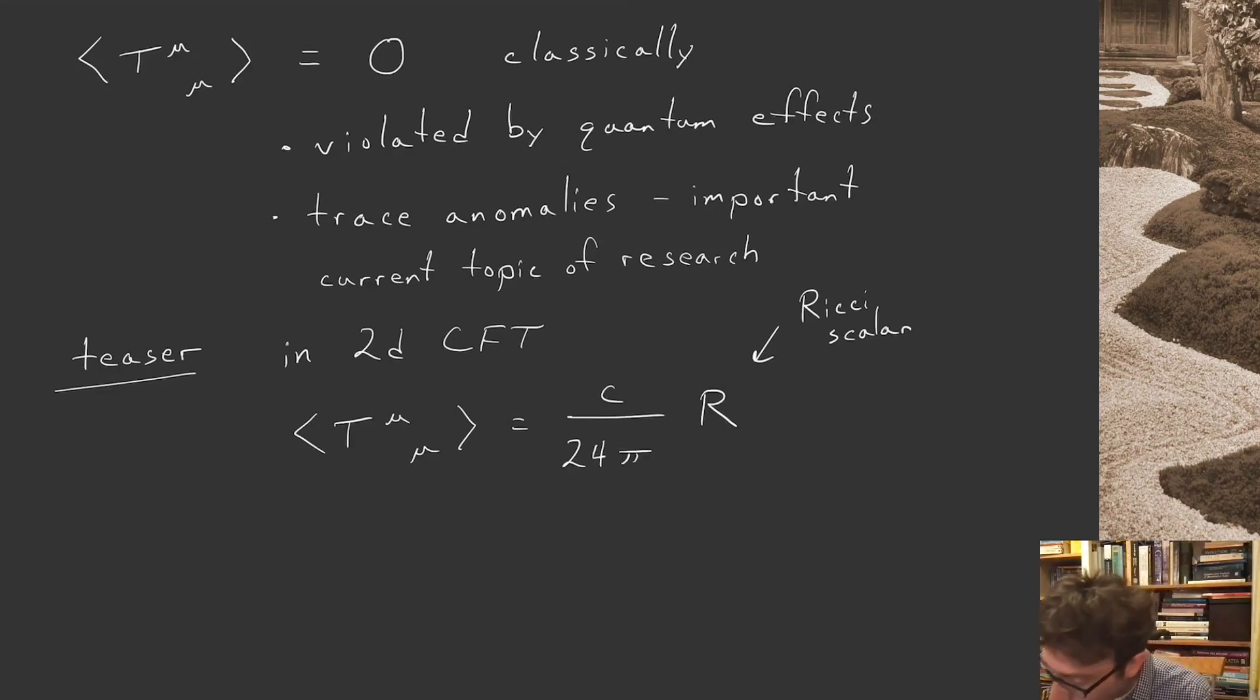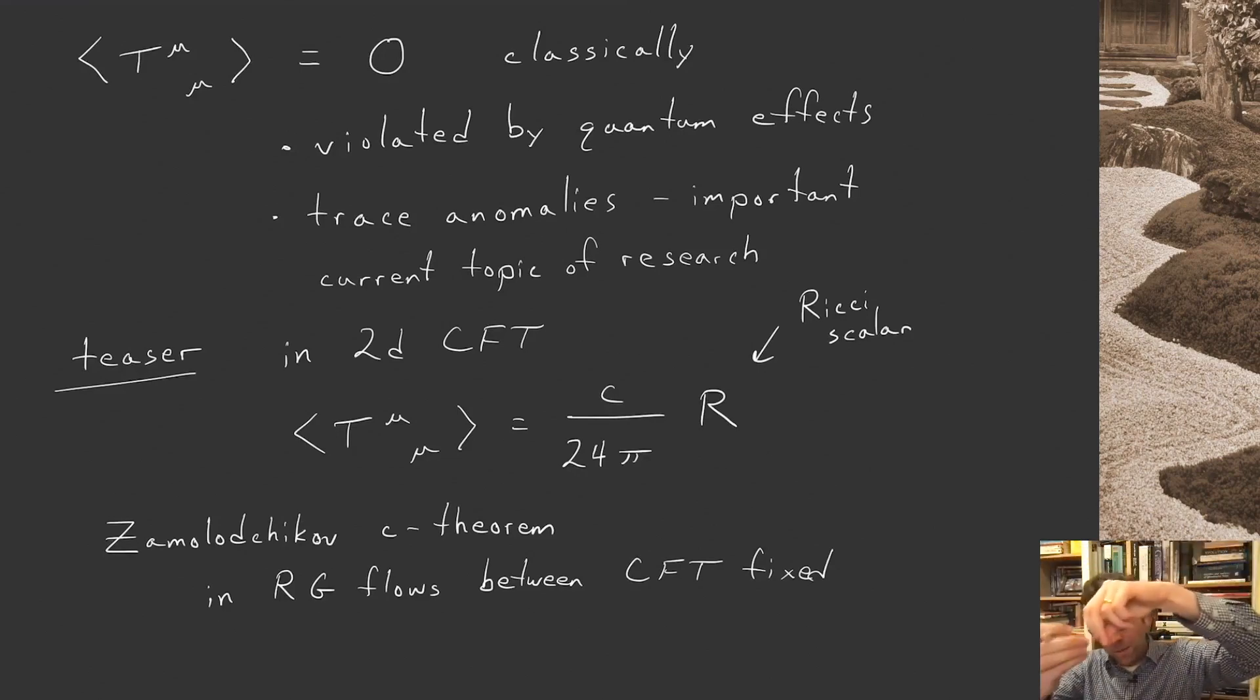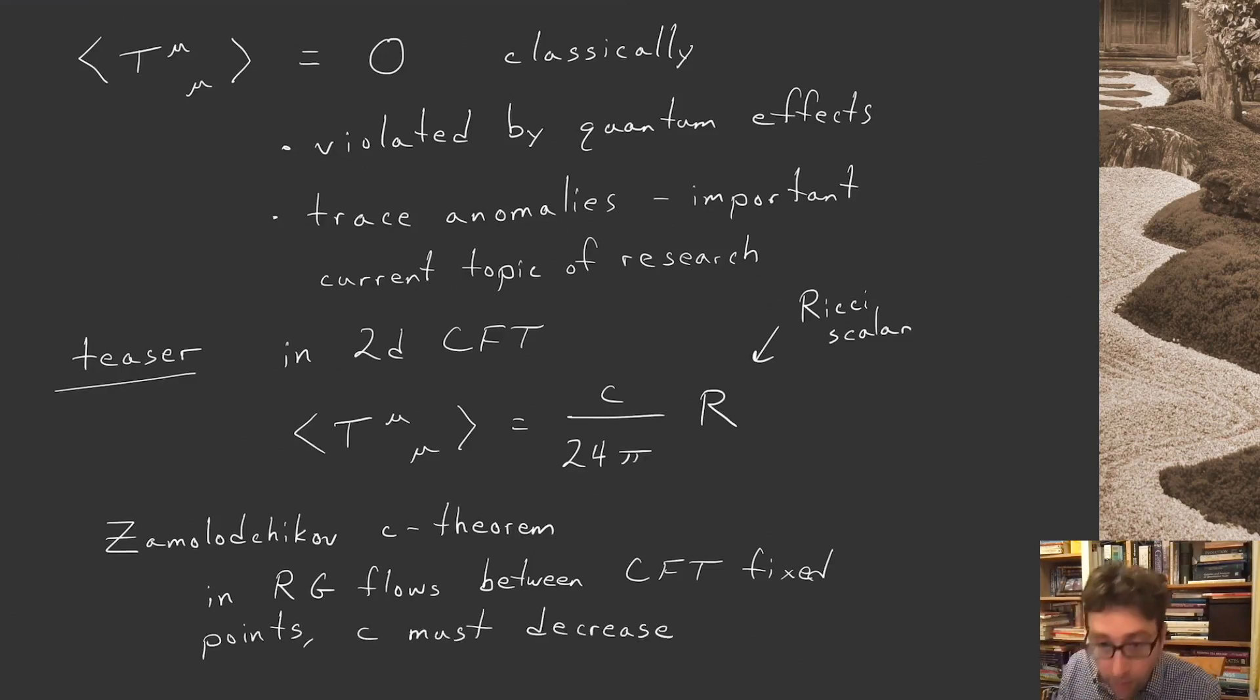What's interesting about this quantity c is there's a theorem proven by Zamolodchikov in the 80s, the Zamolodchikov c-theorem, that if you have an RG flow between CFT fixed points, c must decrease. That puts a very interesting order on the space of conformal field theories in two dimensions. There are generalizations to three and four dimensions, and conjectures that it might hold in higher dimensions as well.